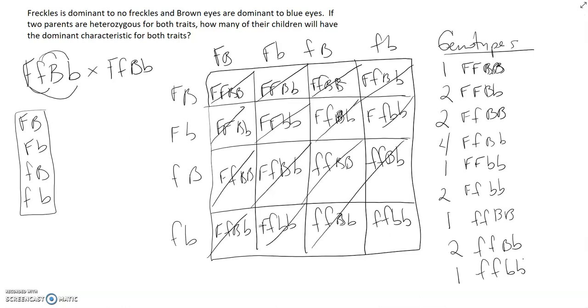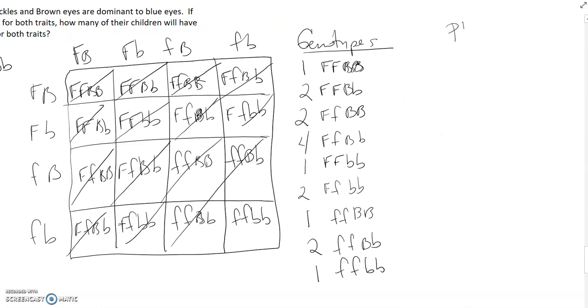Now, for the phenotypic ratio, I could actually group these. So, for example, how many are going to be freckled with brown eyes? Okay, so this one, these two, these two, these four, and that's it. So, four, five, six, seven, eight, nine.